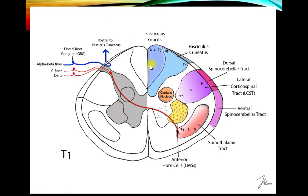Pain and temperature fibers come in through small, relatively unmyelinated fibers and synapse largely in the substantia gelatinosa of the dorsal horn. The key difference is these fibers cross over and ascend in the spinothalamic tract. The columnar arrangement here is exactly the opposite: thoracic fibers are more medial, lumbar and sacral fibers more lateral. Understanding this columnar arrangement has important clinical applications.